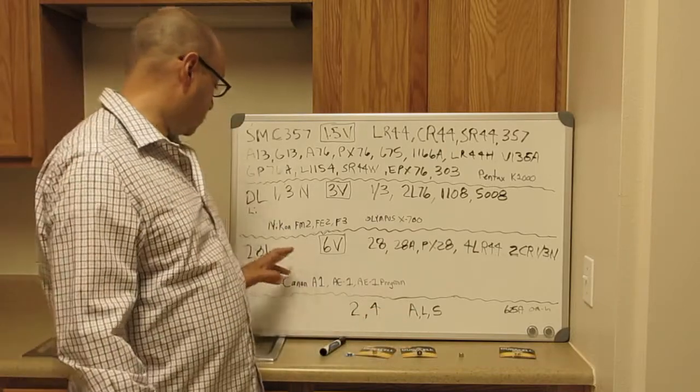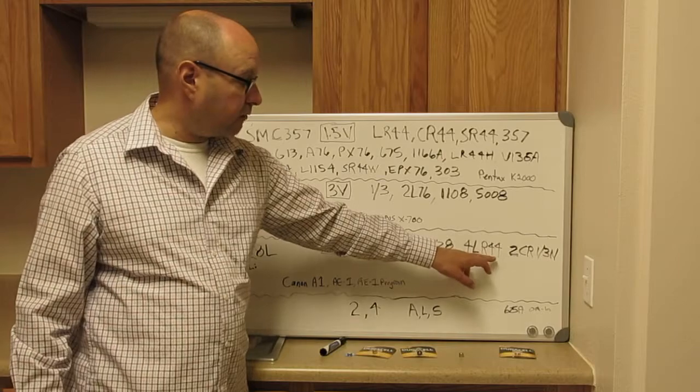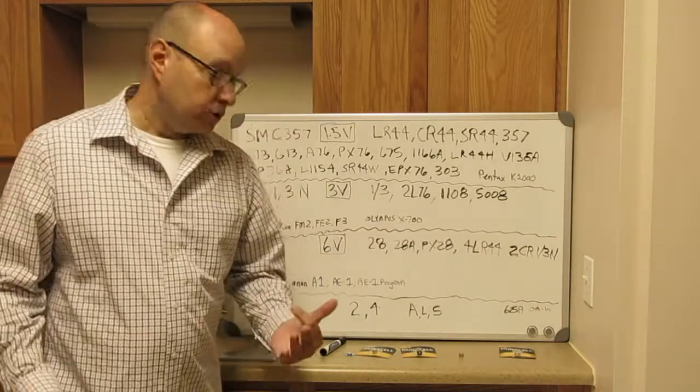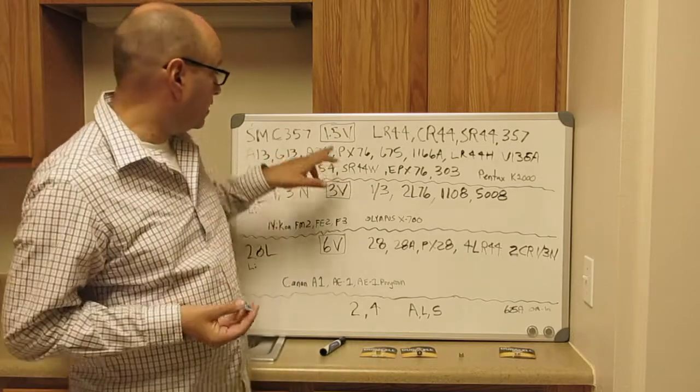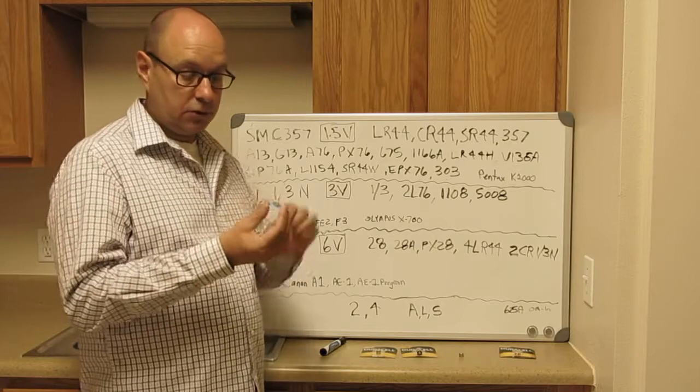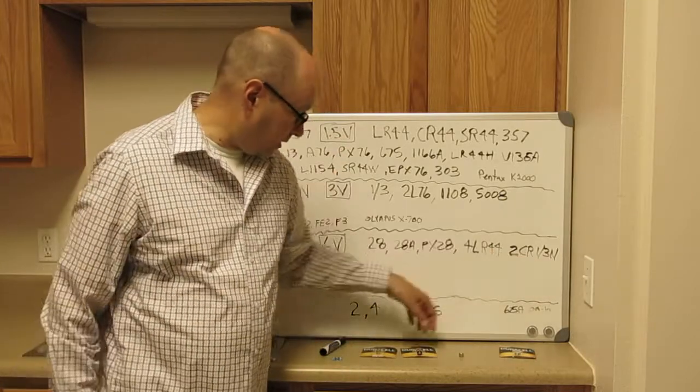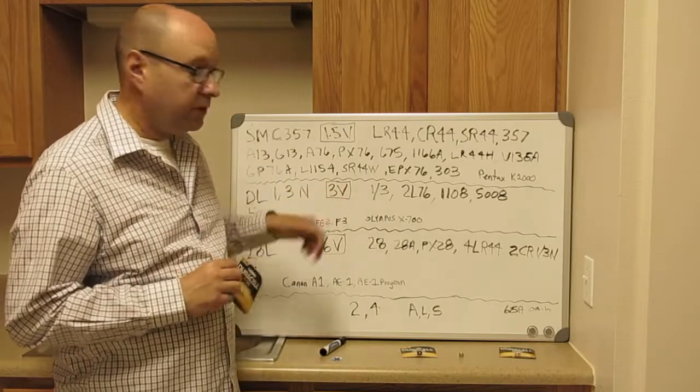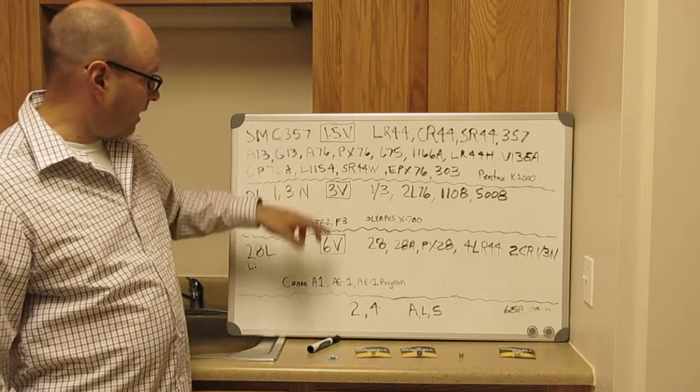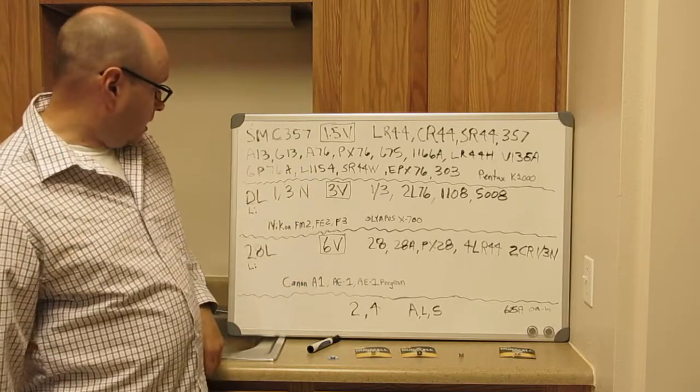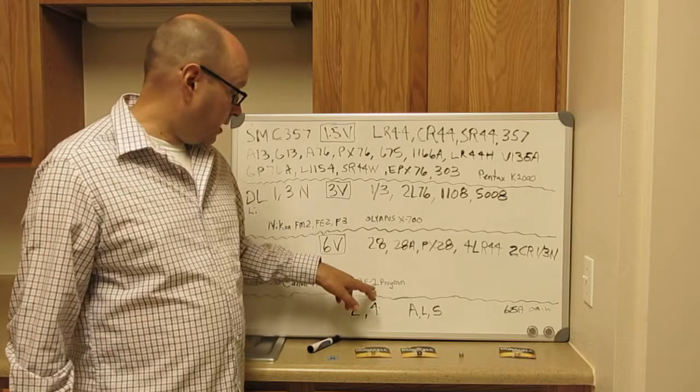And now let's move to the 28L. The 28L is a six volt, and it replaces the 2828A, PX28, 4LR44, and the 2CR 1/3N. So what that means, it's four times this battery. In some cameras you can literally stack four of these on top of each other because 1.5 times four is six volts. The 2CR 1/3N means stacking two of these 3 volt batteries together. The last one here, this six volt, it's the Canon A1, Canon AE1, and the AE1 program.